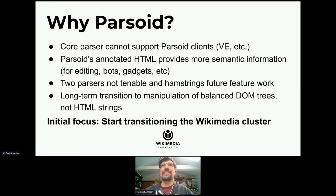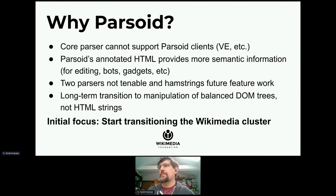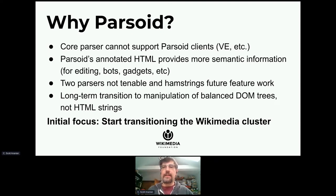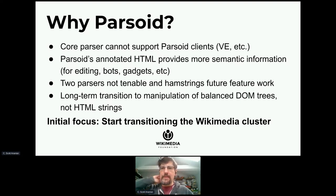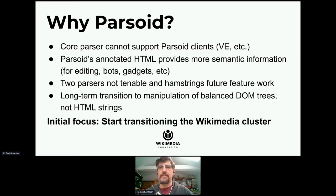Why do we want to do that? The first reason is that Parsoid just generates better HTML. It's more semantic. It has HTML with the additional information needed to support the modern features that Parsoid was originally designed specifically for: Visual Editor, Content Translation Service, Content Translation Extension, First Flow, and now Discussion Tools. And providing that semantic information also allows, in addition to better editing, better bots, gadgets, and search.